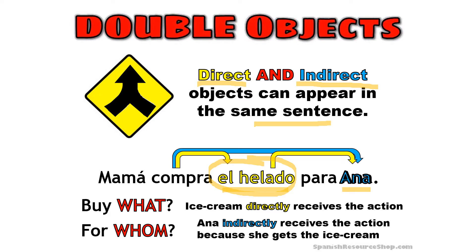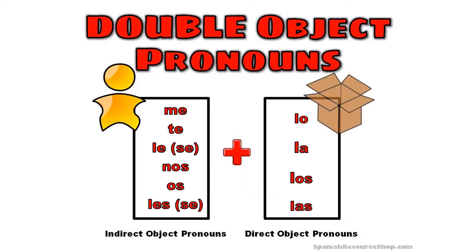The question to find the indirect object is: mamá compra el helado for whom or to whom? Para Ana — that's your indirect object. With that in mind, we could also have a direct and an indirect object pronoun in the same sentence. If you have both indirect and direct object in the same sentence, you always start with the indirect object pronoun.